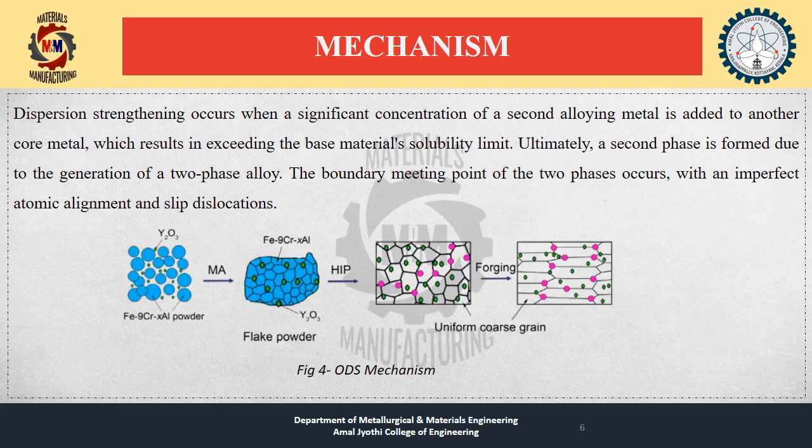Mechanism: The mechanism behind this process is dispersion strengthening. The mechanism of oxide dispersion strengthening is related to the presence of oxide nanoparticles in the material. When a material is subjected to mechanical stress, dislocations are introduced into the crystal structure. These dislocations move through the material, causing it to deform. In a material that has been oxide dispersion strengthened, the oxide nanoparticles act as obstacles for the movement of dislocations. As the dislocations try to move through the material, they encounter the oxide particles and are deflected or pinned. This makes it more difficult for the material to deform and as a result, the material becomes stronger and more ductile.